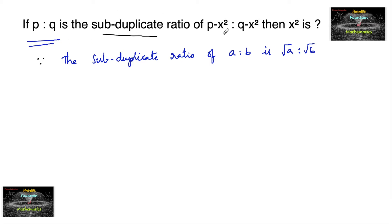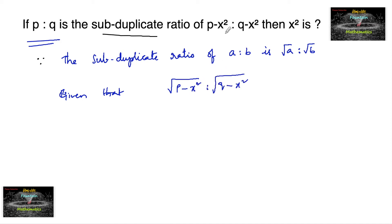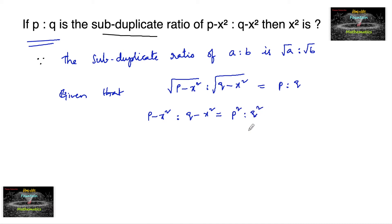p is to q is the subduplicate ratio of (p minus x square) is to (q minus x square), so root of (p minus x square) is to (q minus x square) is given as p is to q. This can also be written as: p minus x square is to q minus x square is equal to p square is to q square, on squaring both sides.